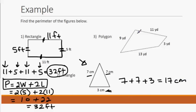And lastly, our polygon. Again, it's not a rectangle. It does have 4 sides, but it's not a rectangle. It does not have 4 right angles. So we simply need to add up the lengths of the sides. So we would add 9 plus 11 plus 3 plus 13.